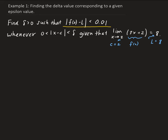Our epsilon value for this problem is given as 0.01, and again this is all directly coming from the formal definition of the limit. So we're going to start with |f(x) - L| less than epsilon. Our function is 3x plus 2, minus L, which is 8, less than epsilon.